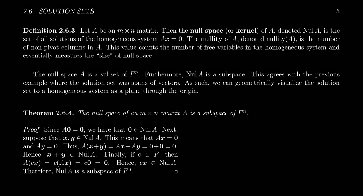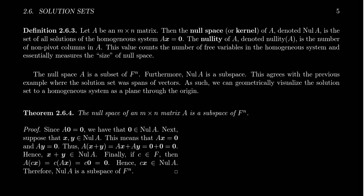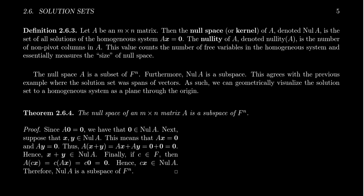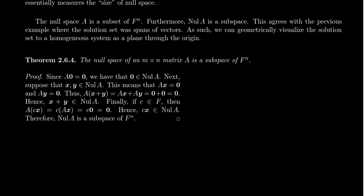But we can do even better. The null space is actually a subspace of F^N. That's why we call it the null space as opposed to the null set. We know it's going to be a subspace of F^N, and we could argue that the null space is just a span of vectors, as we saw in the previous example and will see in this video as well. But it turns out we can argue that the null space is a subspace directly using the definition, without any recitation of spans whatsoever.